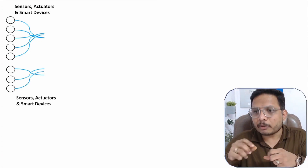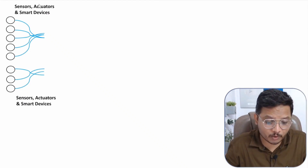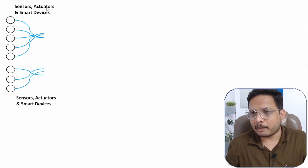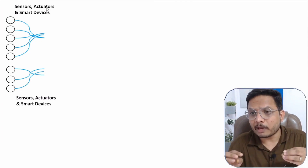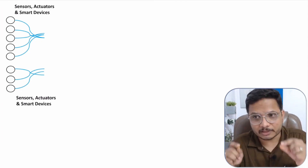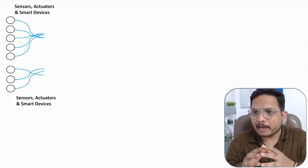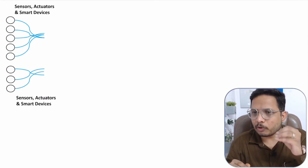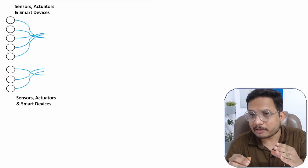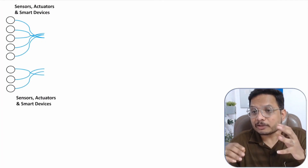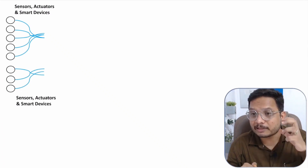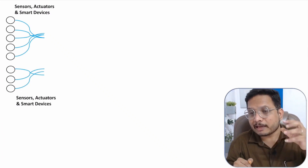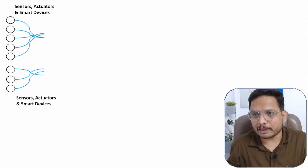Based on sensing physical data, we provide a response. To provide a response, we have actuators. Actuators can include motors, valves, and LEDs — we use various actuators to provide a physical response from the system. You can say that things are embedded systems which contain microcontrollers or microprocessors interfaced with sensors and actuators. Whatever data we sense from the sensors is sent to the next part, called the gateway.